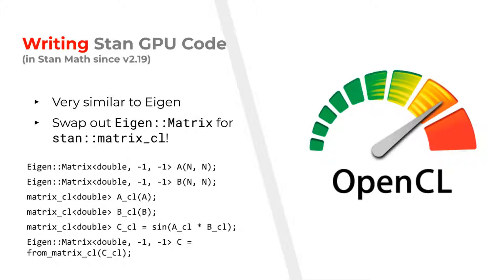Below is an example where we pass two eigenmatrices to STAN's matrix CL class, perform a matrix multiplication, and take the sign of the result, then we pass that back all the way to an eigenmatrix.